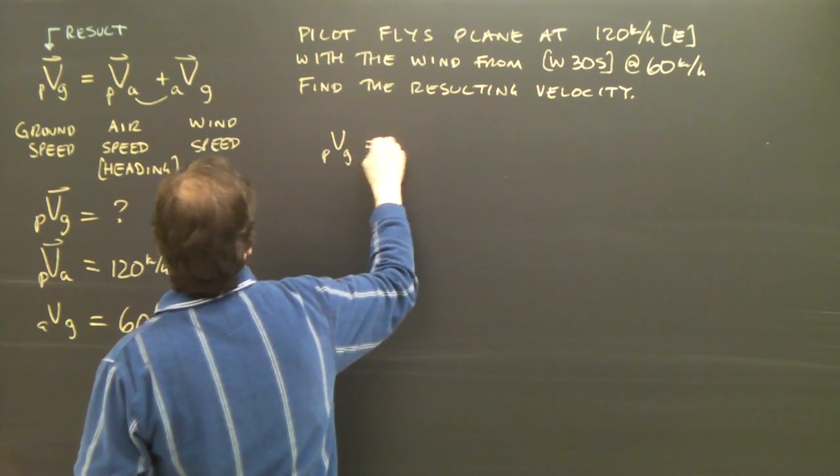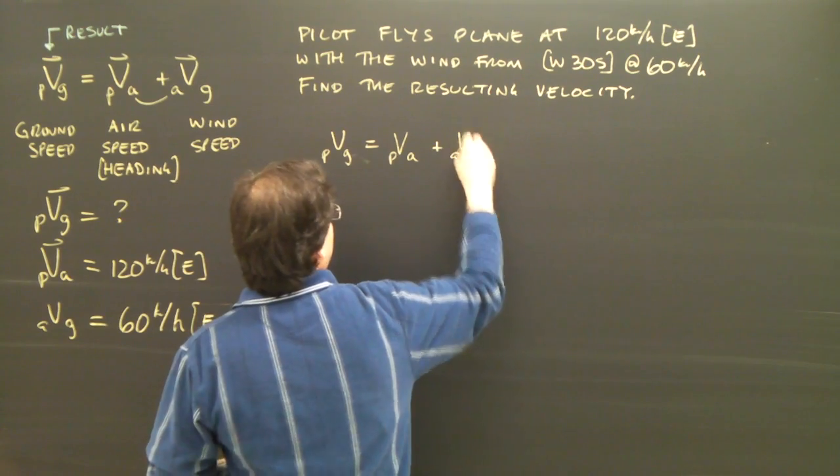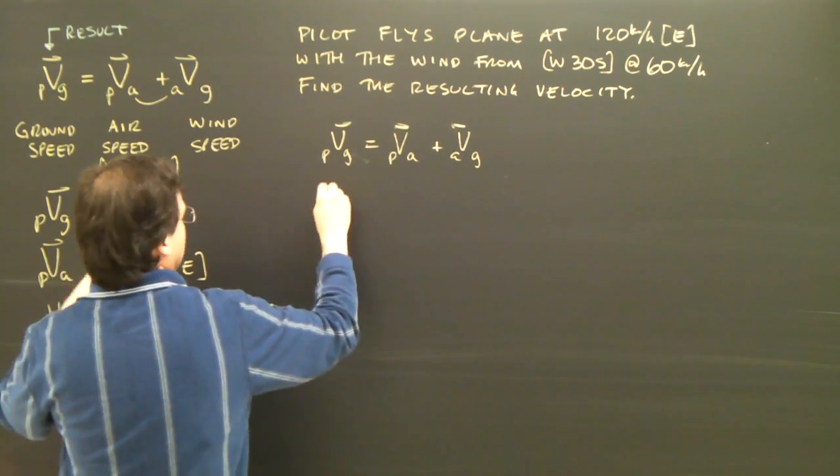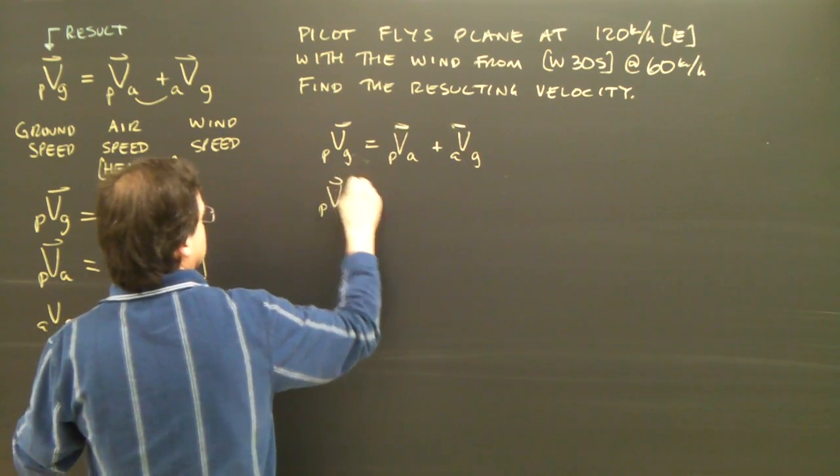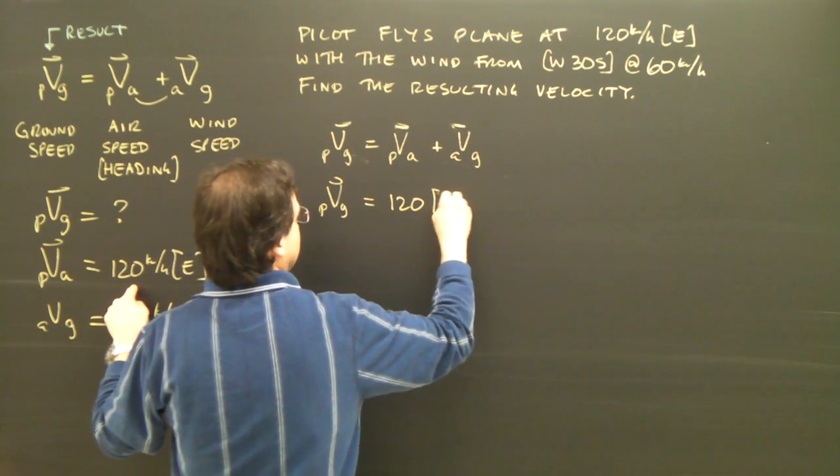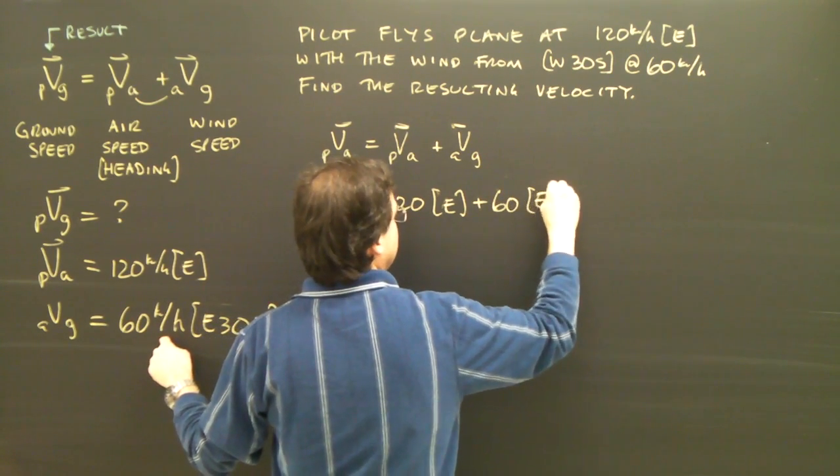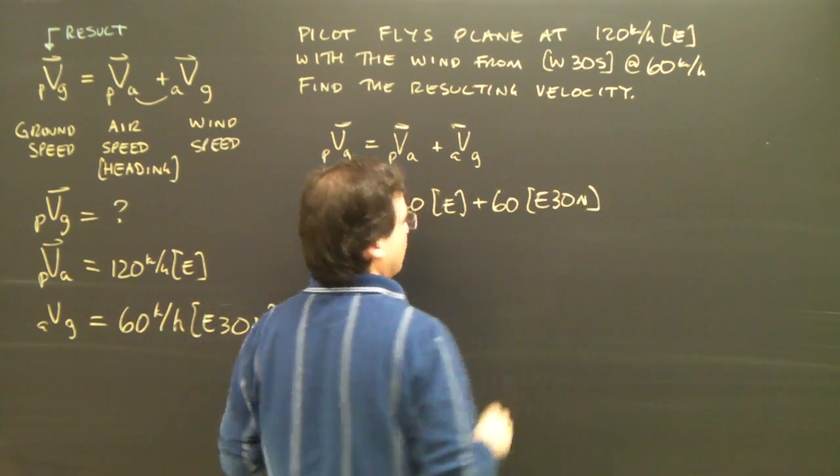The plane relative to the ground is the plane relative to the air, plus the air relative to the ground. So I plug in my numbers, 120 east plus 60 east 30 north.